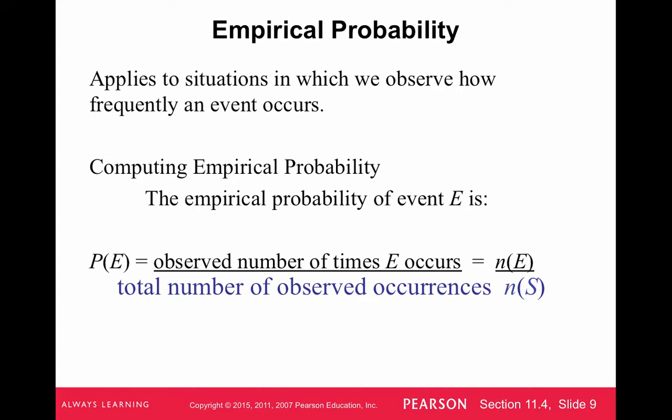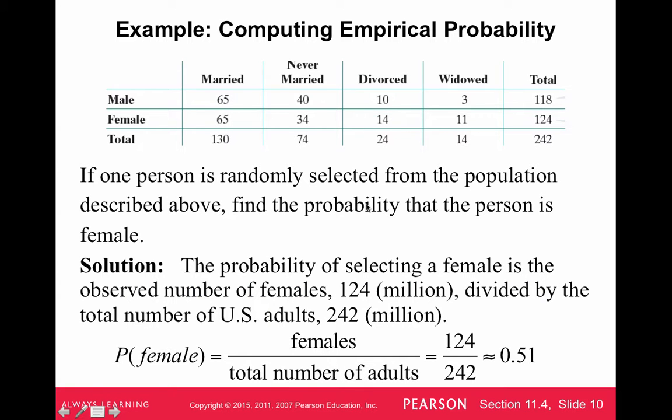Empirical probability is the second kind of probability. We don't do this as much, but it's still pretty useful. It applies to situations in which we observe how frequently an event occurs. The big difference with empirical probability is we have a certain frequency from a table, like we actually have counted things up from an experiment. Computing empirical probability is the observed number of times E occurs divided by the total number of occurrences. It's very similar, just the way we're looking at computing the probability.